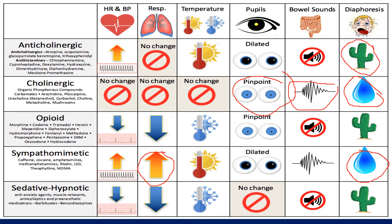Let's go back to the opioid toxidrome, since this is one of the most common toxicities. This includes morphine, codeine, heroin, fentanyl, oxycodone, and all those medications. It's going to lower your heart rate and blood pressure, but most importantly it's going to lower your respirations — and that's what kills people. Temperature is a bit down. Pinpoint pupils — this is often easy to pick up. They're going to be a little more moist, with hypoactive bowel sounds. Remember, opioids cause extreme constipation.